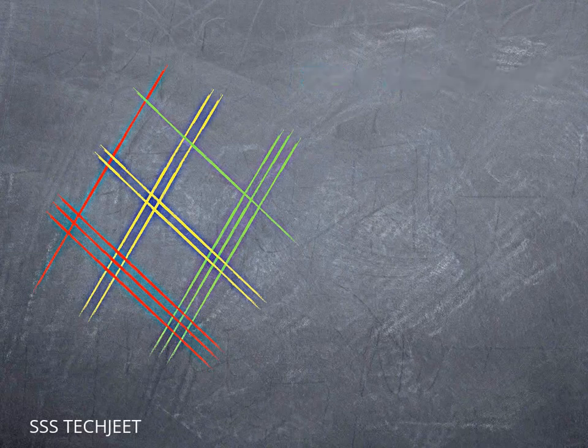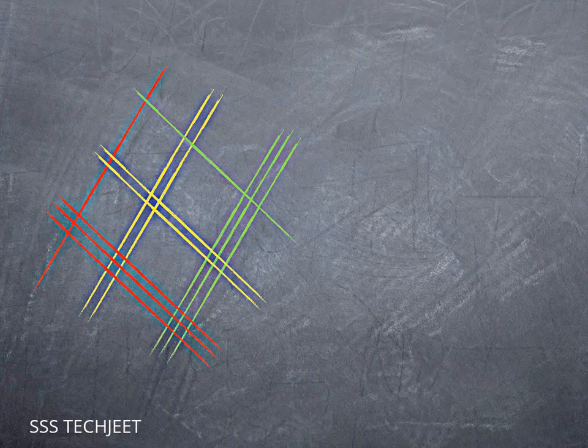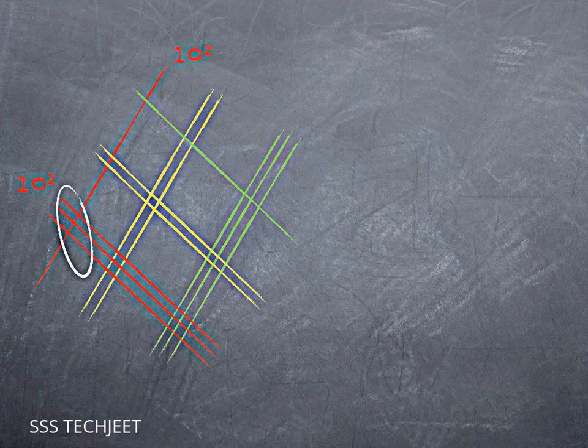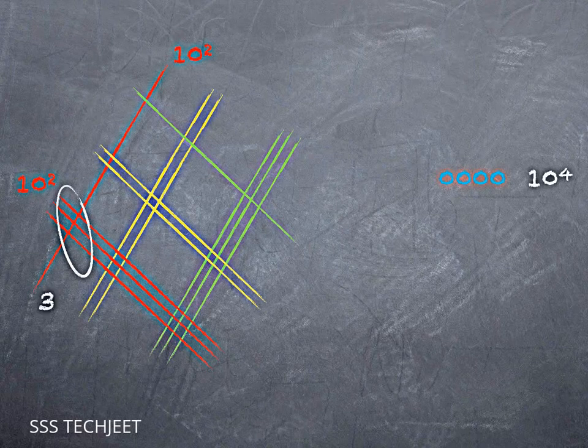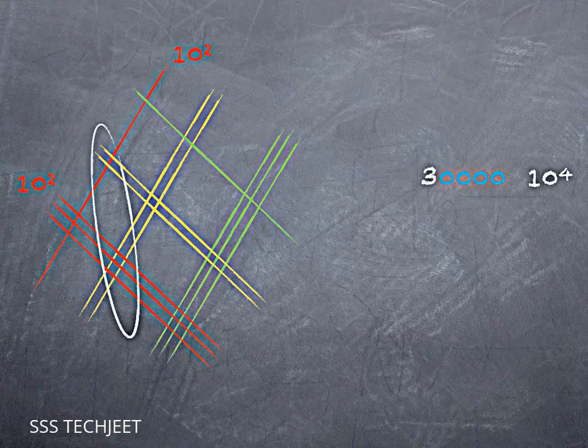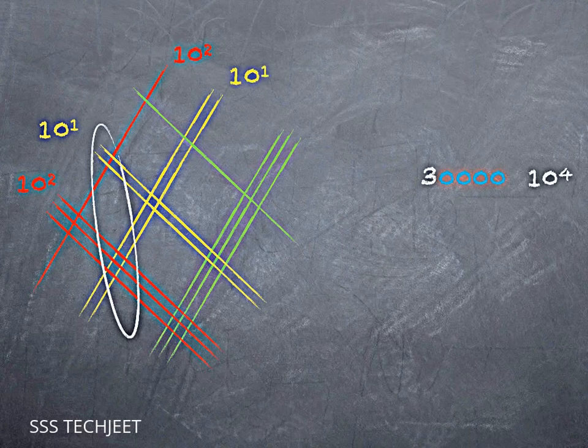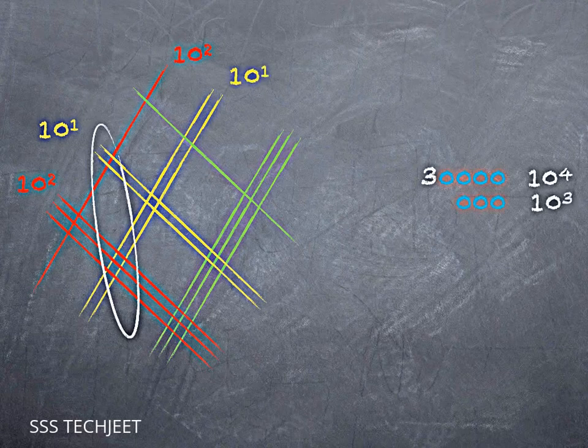If we want to simplify things a little bit for ourselves, we can take a look ahead of time at where our intersections are going to leave us. And we can write out some placeholder zeros. For example, these are hundreds times hundreds, or ten-squareds times ten-squareds. That multiplication is going to leave me with four trailing zeros, because ten-squared times ten-squared gives me ten to the fourth. So that three I get when I count up the intersection tells me I really have three ten-thousands.